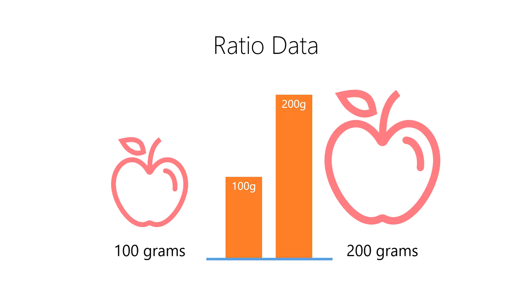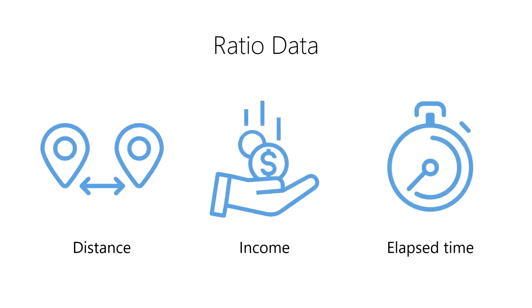So, 200 grams of mass is twice as much mass as 100 grams of mass. Other examples of ratio data include the distance between two points, income from your job, and elapsed time.